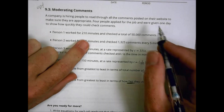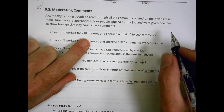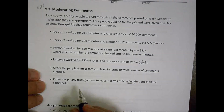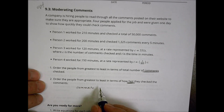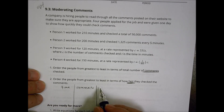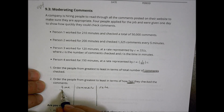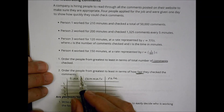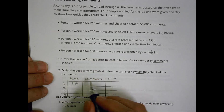Let's take a look. Person one did a total of 50,000 comments in 210 minutes — that's pretty straightforward. Let's put this in a chart with columns for comments, time, and rate. Person one: 210 minutes, 50,000 comments. Person two works for 200 minutes.